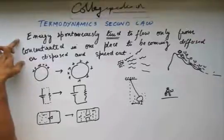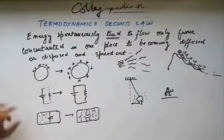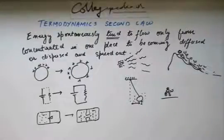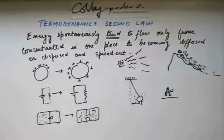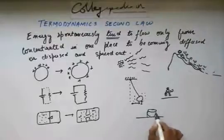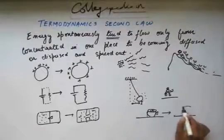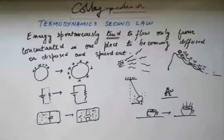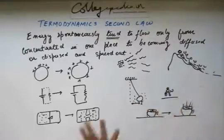This statement has to hold true for any spontaneous process — otherwise that process will not be spontaneous. You can think of any spontaneous process and check whether energy is being dispersed during that process or not. Once we have established faith in this observation, we can now answer: if someone asks why coffee does not become hot on its own, you can answer that energy is not being dispersed in this process — rather, energy is being concentrated from the surrounding into this cup. That's why it would be hot, but the process is not spontaneous.